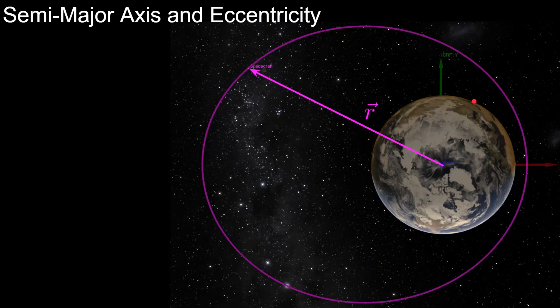We'll start with semi-major axis and eccentricity, which correspond to the size and shape of an orbit. Here we have Earth, the Milky Way in the background, an elliptical orbit, and a spacecraft currently at this position shown by its position vector r. We need to define two points in this orbit: periapsis, which is the point closest to the center of the Earth, and apoapsis, which is the farthest point. The line connecting these two points is called the aps line.